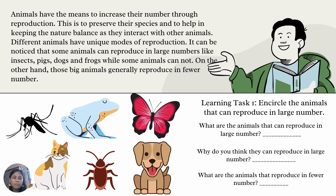Different animals have unique modes of reproduction. It can be noticed that some animals can reproduce in large numbers, like insects, pigs, dogs, and frogs, while some animals cannot. On the other hand, big animals generally reproduce in fewer numbers.